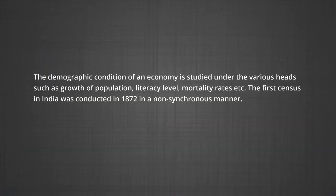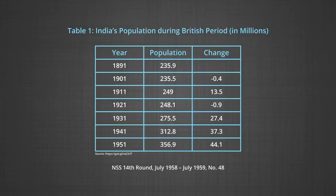The demographic condition of an economy is studied under various heads such as growth of population, literacy level, mortality, etc. The first census in India was conducted in 1872 in a non-synchronous manner, but various details about the population of British India were first collected through a census in 1881. Despite certain limitations, it revealed the unevenness in India's population growth.